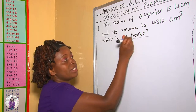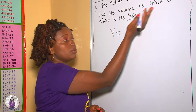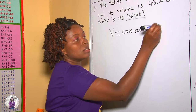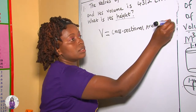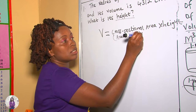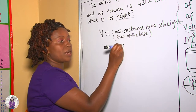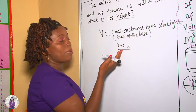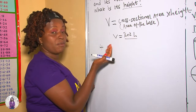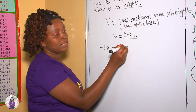To get the height we need to apply the formula. The formula for volume of a cylinder is cross-sectional area times height. This can also be the area of the base times the height. In a cylinder the base is a circle, therefore V = π r² × h. Once we apply this formula we will be able to get our unknown, which is the height. Now we replace whatever we are given into the formula.